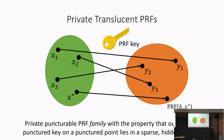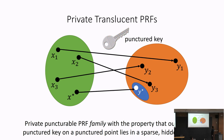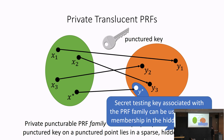The key cryptographic primitive we introduce is what we call a private translucent PRF. It is a private puncturable PRF family with the additional property that when you take a punctured key and evaluate it at the punctured point, that evaluation always lies in a sparse hidden subset of the range. There is also a secret testing key associated with this PRF family that allows you to check for membership within this subspace.